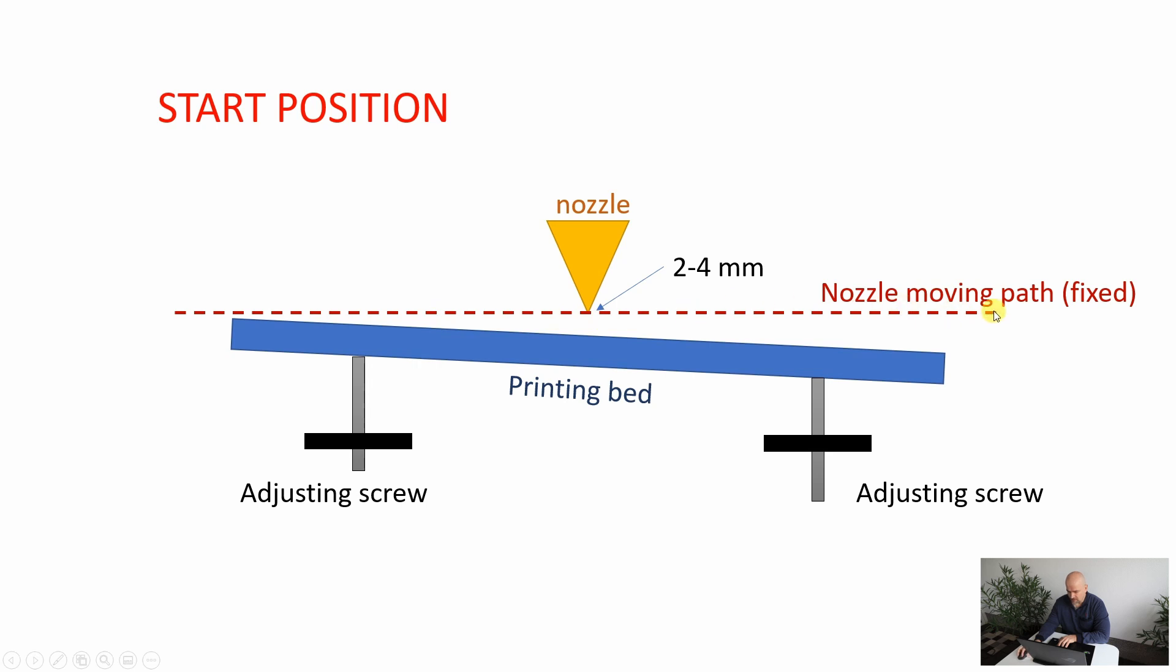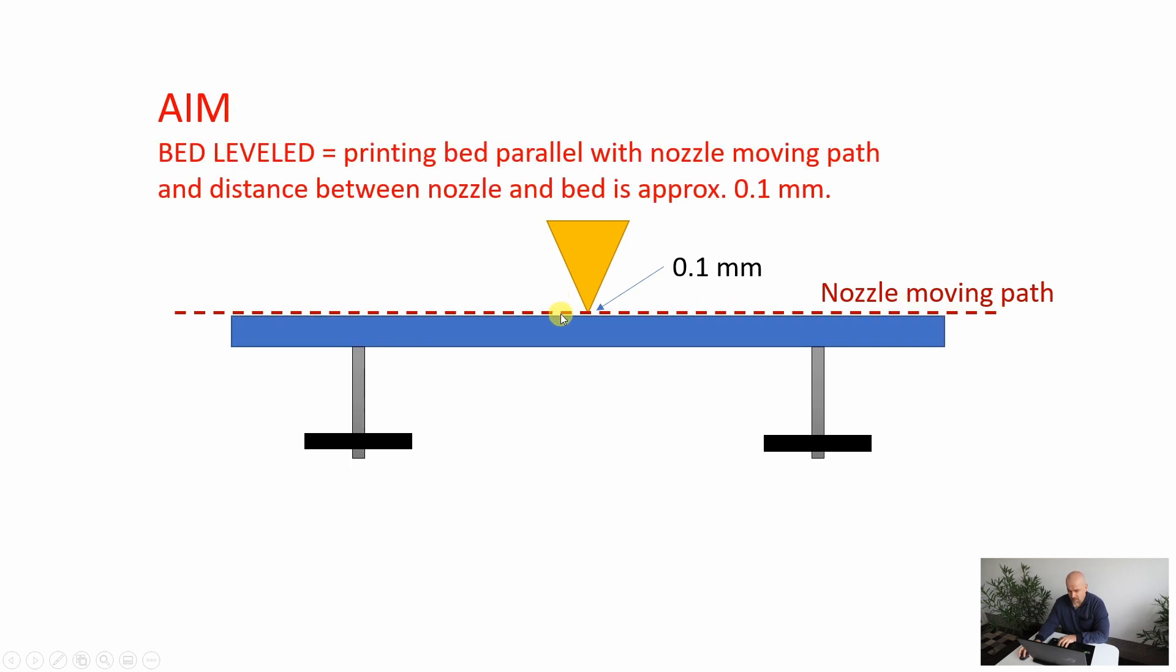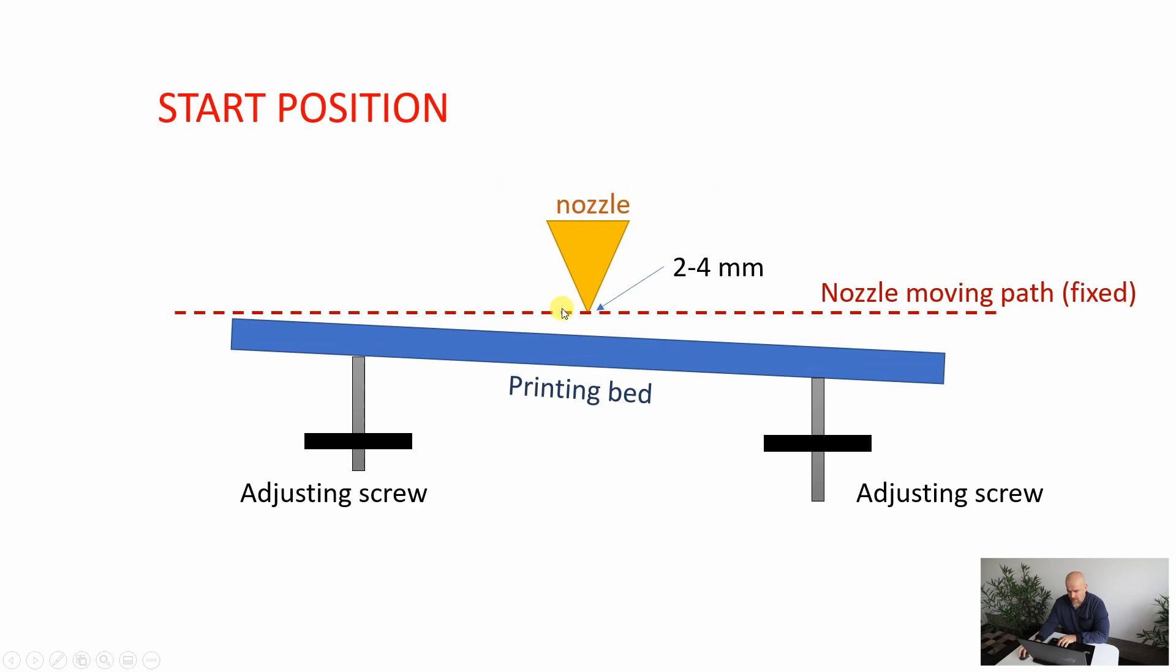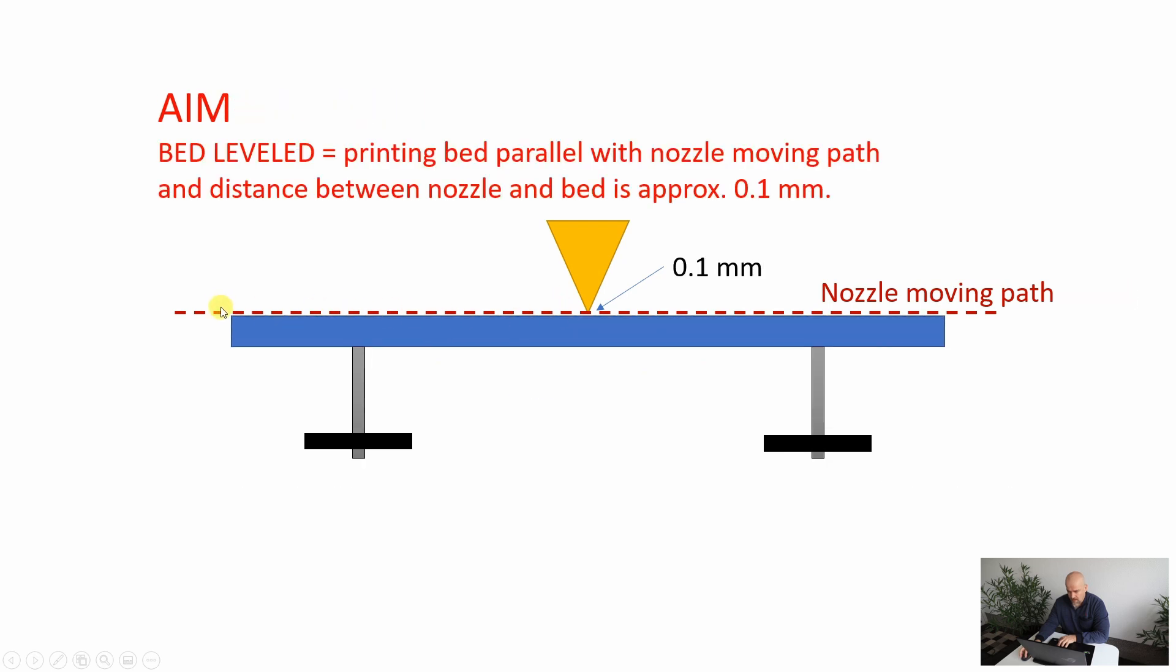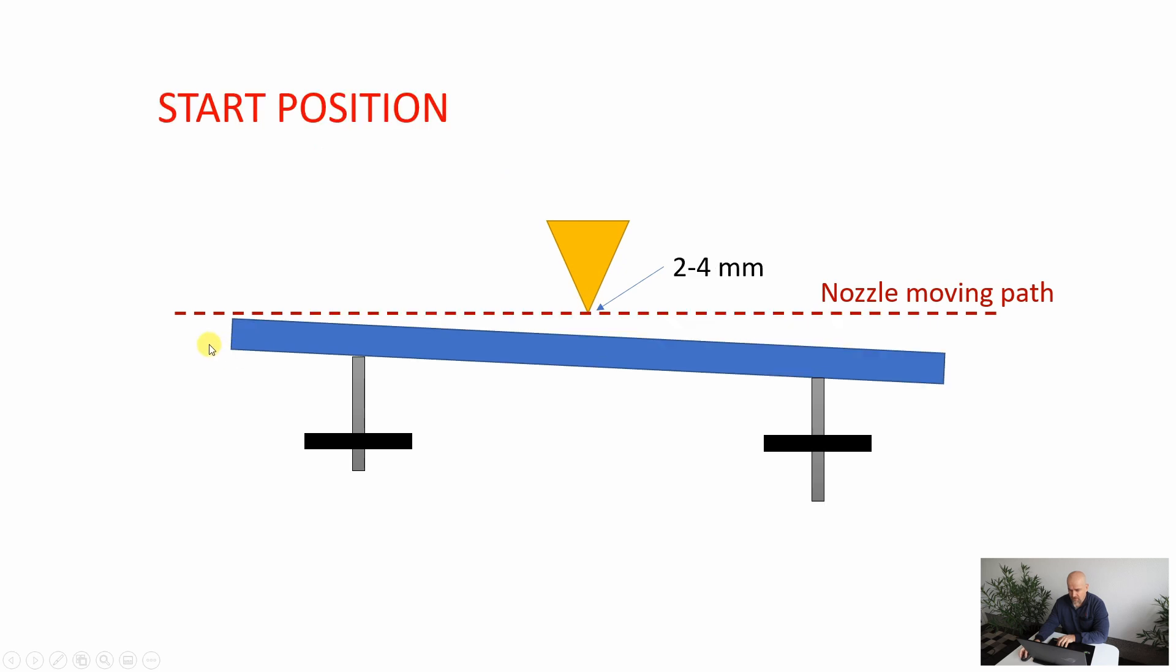This is the aim—we want to make the bed surface parallel with the moving path of the nozzle and have a distance of approximately 0.1 or 0.2 millimeters from the nozzle.